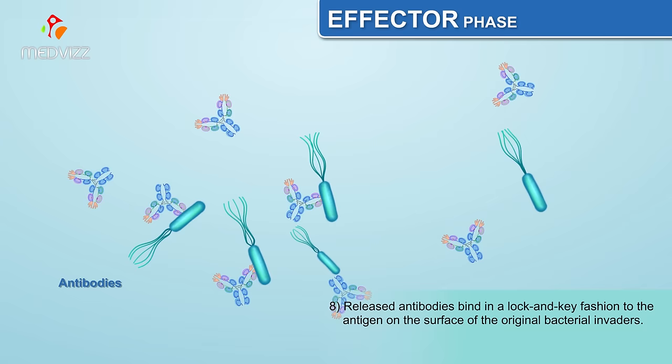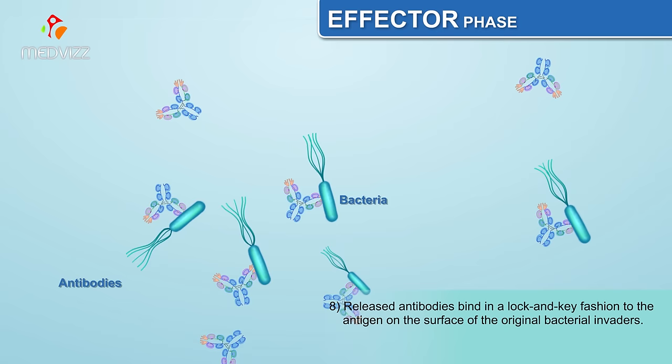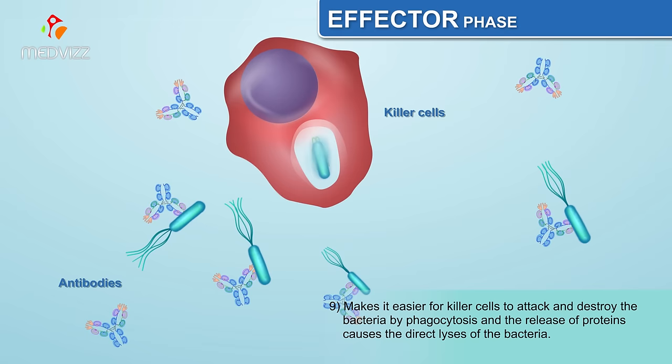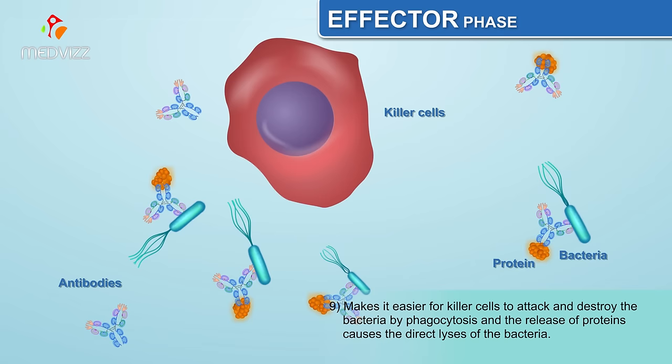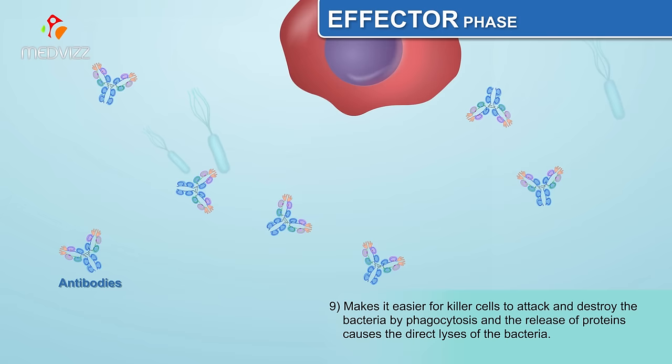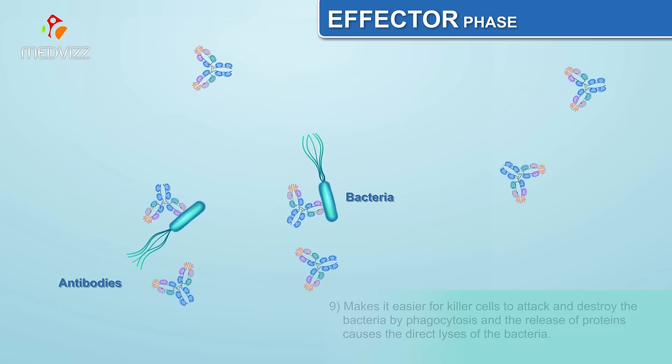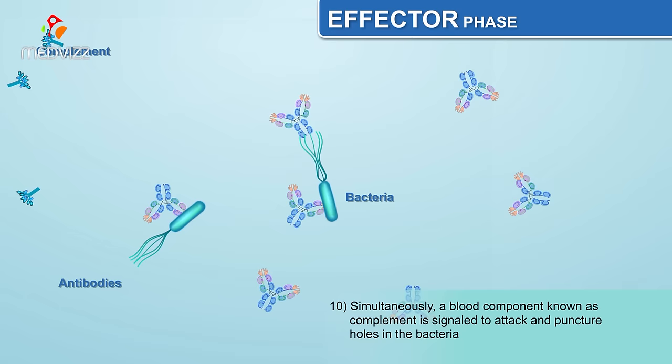The released antibodies bind in a lock-and-key fashion to the antigen on the surface of the original bacterial invaders. This makes it easier for killer cells to attack and destroy the bacteria by phagocytosis, and the release of proteins causes the direct lysis of the bacteria. Simultaneously, a blood component known as complement is signaled to attack and puncture holes in the bacteria.